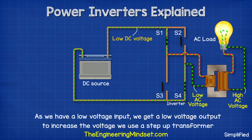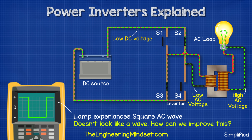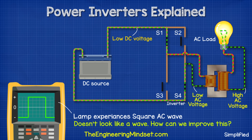As we have a low voltage input, we're going to get a low voltage output. To reach the 120 volts or 230 volts required to power our appliances, we will also need a transformer to step up the voltage to a useful level. When we look at this through an oscilloscope, we get a square wave in the positive and the negative regions. This is theoretically AC because it reverses direction, but it doesn't really look much like an AC sine wave, so how can we improve this?